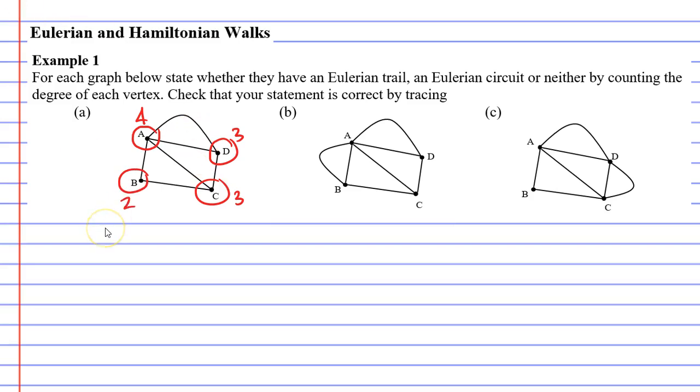So for question A, you will notice we have two vertices with an odd degree. So what does that mean? Well, that means that an Eulerian trail exists.